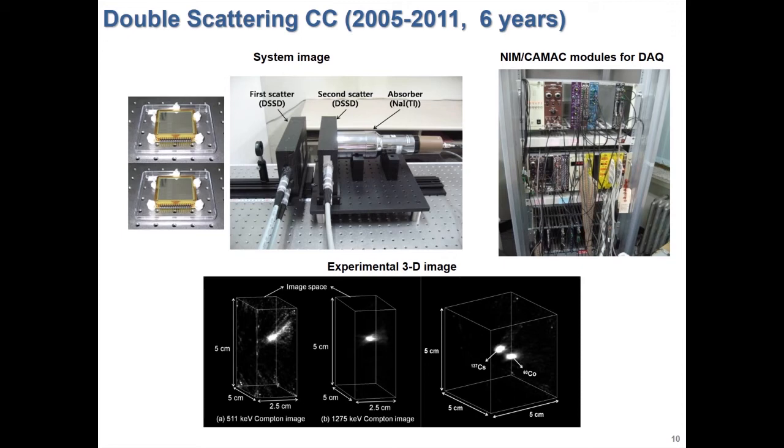This is the double-scattering Compton camera, which was developed by our research team, and it has excellent imaging resolution using two high-performance semiconductor detectors as scatterers. Below is the 3D image of radiation sources obtained by this imaging device.